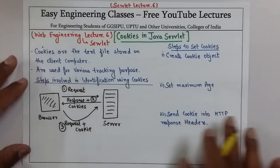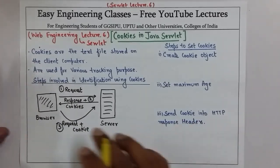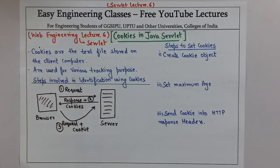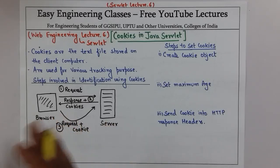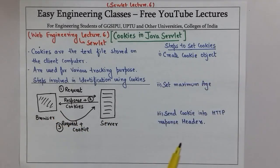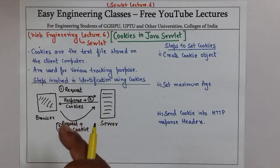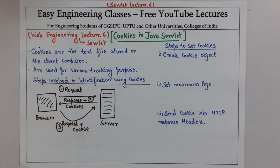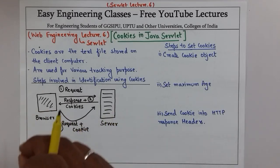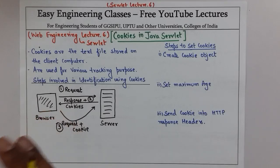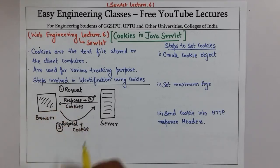For example, a client sends his name, age, or identification number to the server. The server sends back the response saying welcome to the website and stores the identification number on the client side. So whenever a client accesses the server again, he doesn't have to enter the identification number because that identification number is present in the cookie.